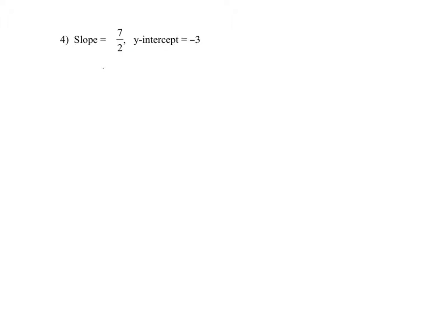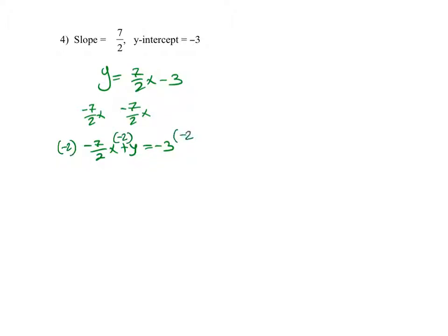For the next one: y equals 7 and a half x minus 3. I subtract 7 and a half x from both sides to get negative 7/2 x plus y equals negative 3. Then I multiply by negative 2 to make the x coefficient positive, so 7x minus 2y equals 6. That's my standard form.